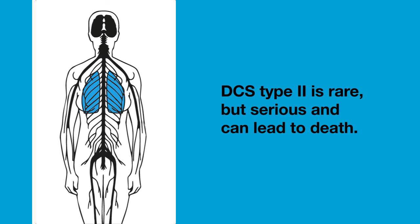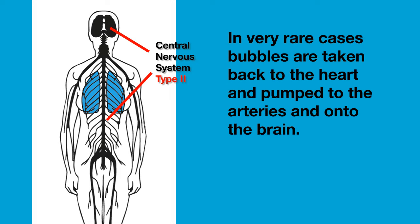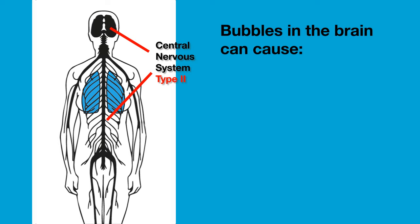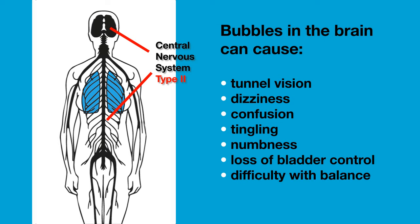Decompression sickness type 2 is rare, but serious, and can lead to death. The most common form involves nitrogen bubbles that interfere with the functioning of your central nervous system. In very rare cases, bubbles are taken back to the heart from the lungs and pumped into your arteries and onto your brain. They can even form in your brain directly — cerebral decompression sickness. These bubbles block blood flow in the brain and, depending on the area affected, can cause tunnel vision, dizziness, confusion, tingling, numbness, loss of bladder control, difficulty with balance, and in the worst cases, paralysis.